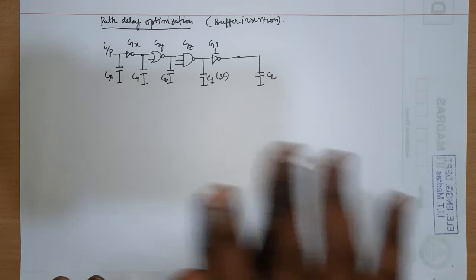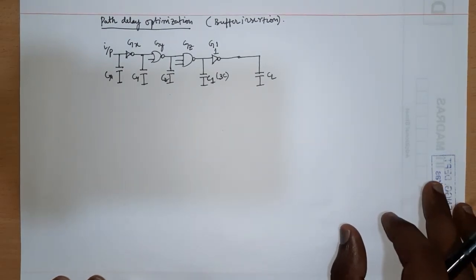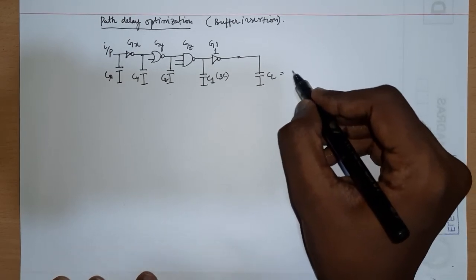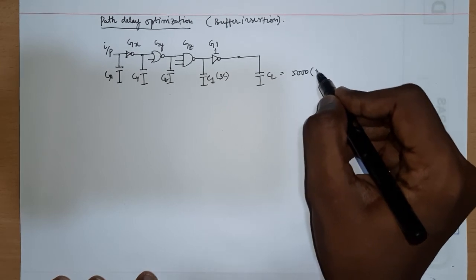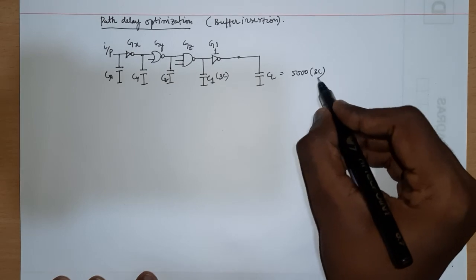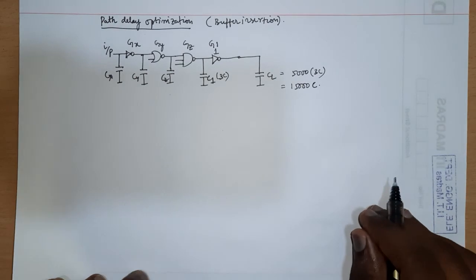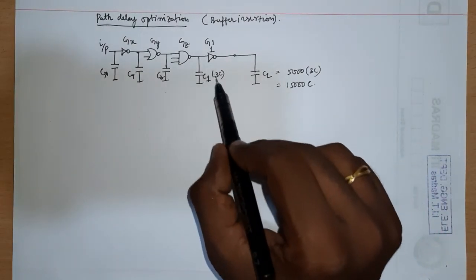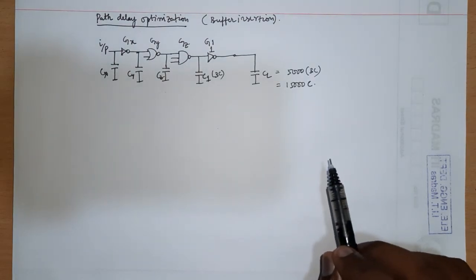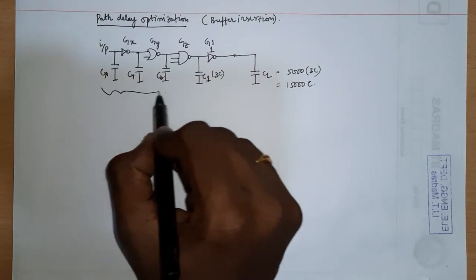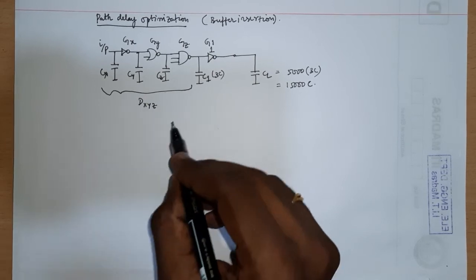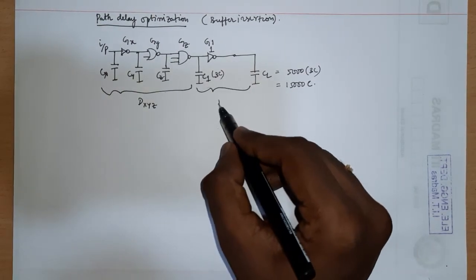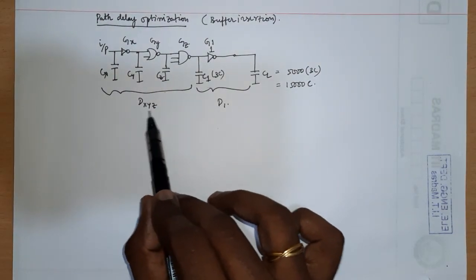To calculate the path delay we know how to do it — we've done the same example multiple times. Say this load capacitance is somewhere around five thousand times the input capacitance of this gate, so five thousand times 3C is fifteen thousand C. My load capacitance is very high like this — five thousand times the input capacitance — so the electrical effort of this particular gate would be CL divided by 3C, which is around five thousand.